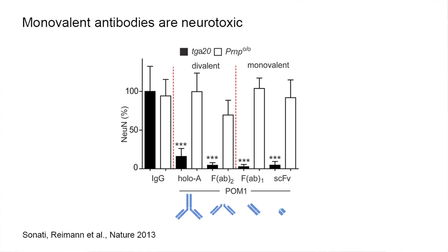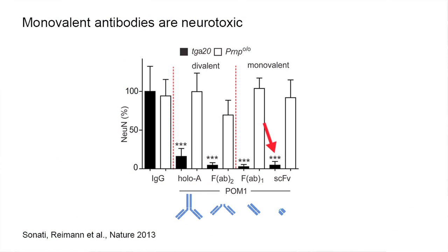What we then found — and this was really what made the story very exciting — is that toxicity does not require bivalency. That is, we can use bivalent versions of the antibodies like FAB2 fragments, but we can also use FAB1 fragments. We can even use single-chain FV fragments, which are very small recombinant versions of the antibodies, and these are also very highly toxic.